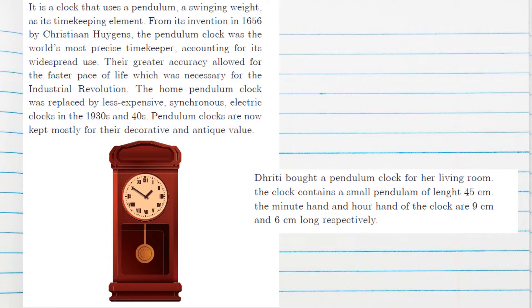Detail about the pendulum clock is given. Dhrithi bought a pendulum clock for her living room. The clock contains a small pendulum of length 45 centimeters. The minute hand and hour hand of the clock are 9 centimeters and 6 centimeters long respectively.